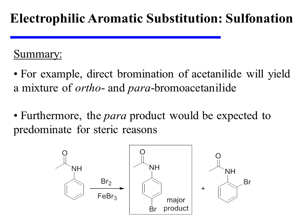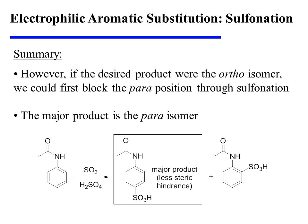For example, the direct bromination of acetanilide will yield a mixture of the ortho and para products, and it is the para product that would be expected to predominate for steric reasons. However, if the desired product were the ortho isomer, we could first block the para position through sulfonation. The major product of this first EAS reaction of acetanilide is the para product, for steric reasons.